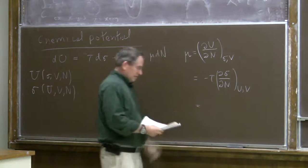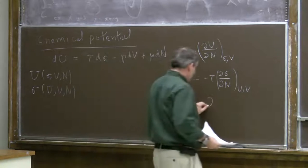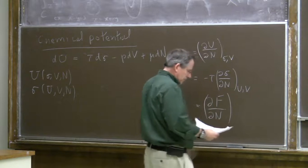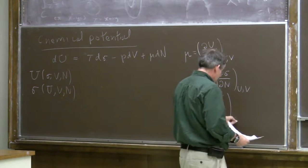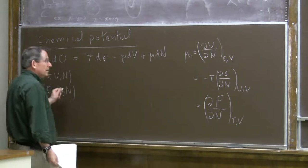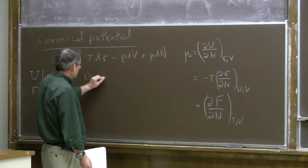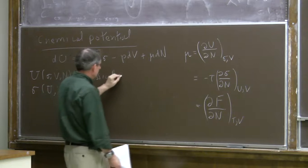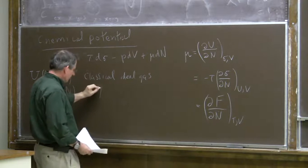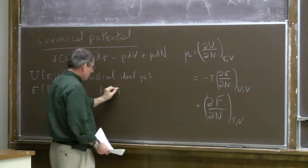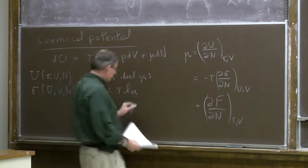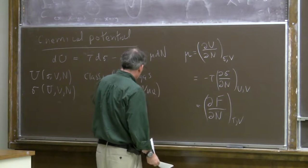If we consider holding temperature fixed, then differentiating Helmholtz free energy with respect to number of particles with temperature and volume fixed gives the chemical potential. In the case of the classical ideal gas—the low-density ideal gas—the chemical potential can be written as τ times the natural logarithm of concentration divided by quantum concentration.